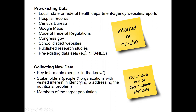You can look at published research studies to give you prior evidence related to your particular target audience. For example, with school children in 7th through 9th grade at a specific local school, there may not be published research on that exact school, but there could be published research on children between 7th and 9th grade. There may also be pre-existing datasets like NHANES where you can see, as a nation, how your target audience is doing, giving you background information before delving deeper into your particular target audience.